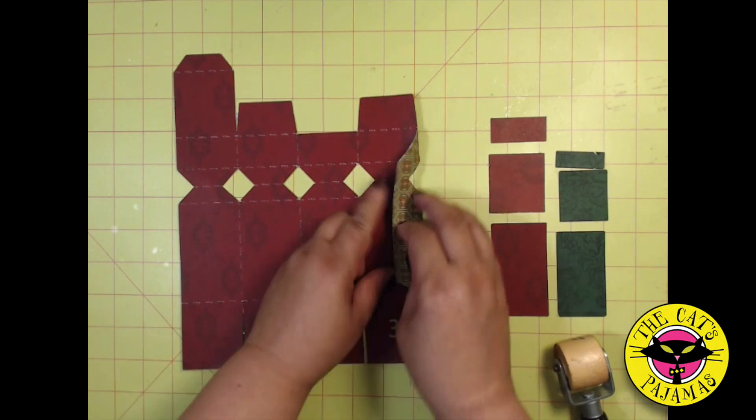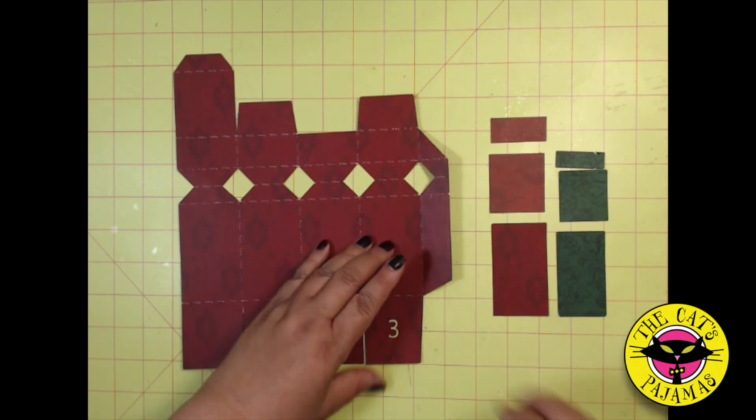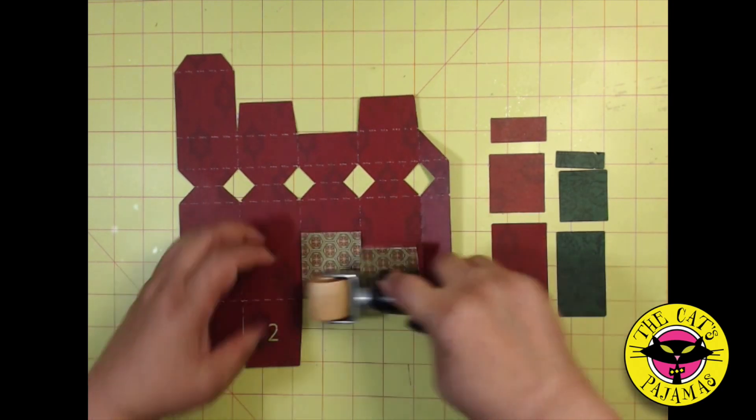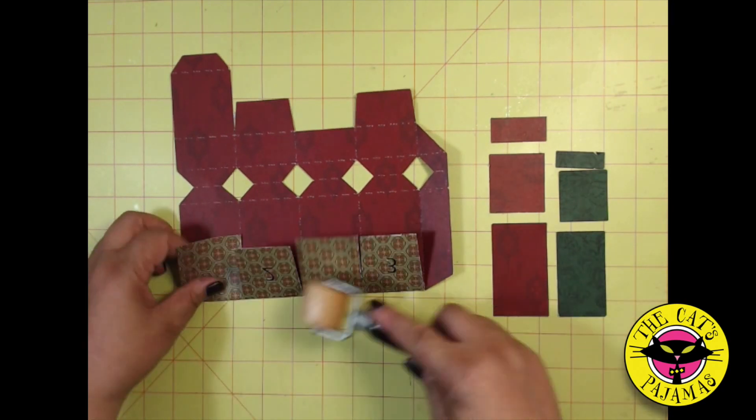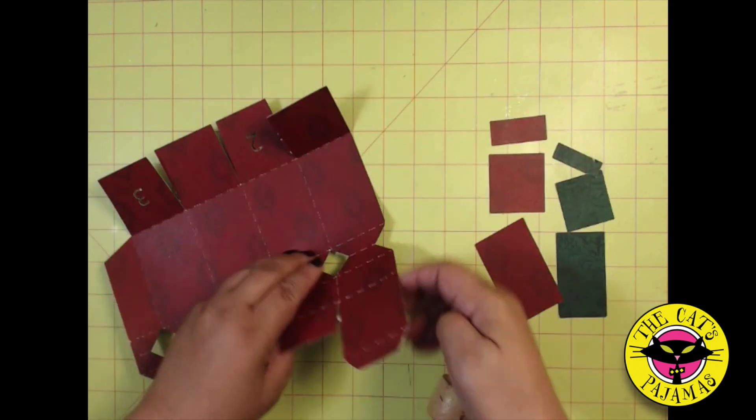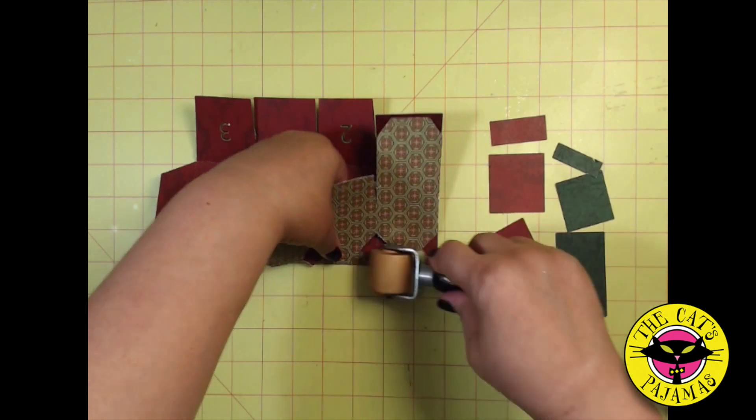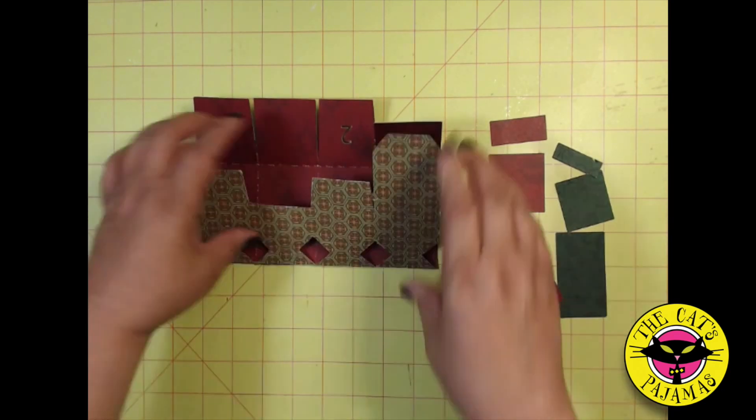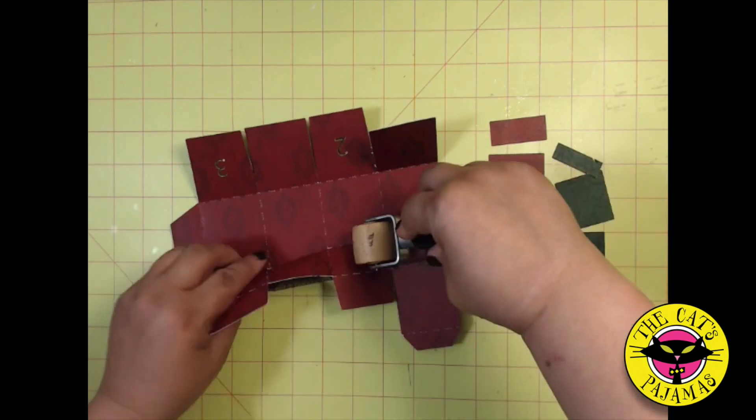Now just valley fold along the dashed lines, except for the dashed line in the center of the diamond, just like we did with the cracker. That should be a mountain fold. Keep folding and creasing.